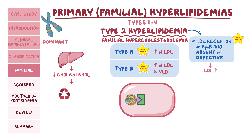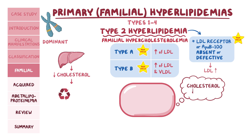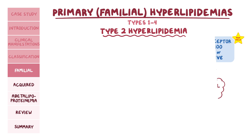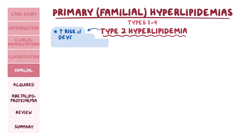Because the liver cells aren't getting any LDL back, they begin to think that cholesterol is actually low in the blood, and so they start making even more cholesterol and sending them out in VLDL. As you can imagine, this would worsen the problem. Unlike type 1, type 2 hyperlipidemia will increase the risk of developing atherosclerosis, and this is high yield.